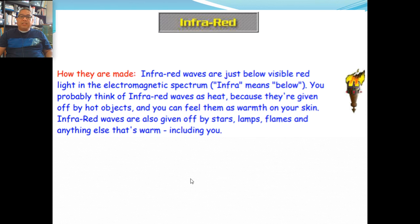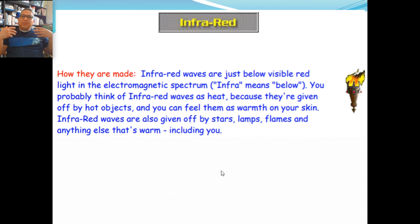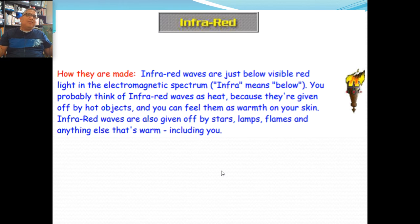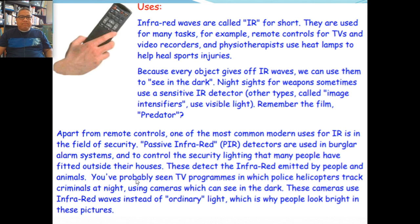Infrared waves are just below visible red — very close to visible light, but you can't see it. You probably think of infrared waves as heat because they're given off by hot objects and you can feel the warmth. Like when you're grilling using coal, you feel the heat without being that close to the source — that's the infrared. Your body also releases infrared, and that's why police can catch criminals hiding in the forest, because night vision goggles can detect those infrared emissions. Applications include remote controls and other devices.